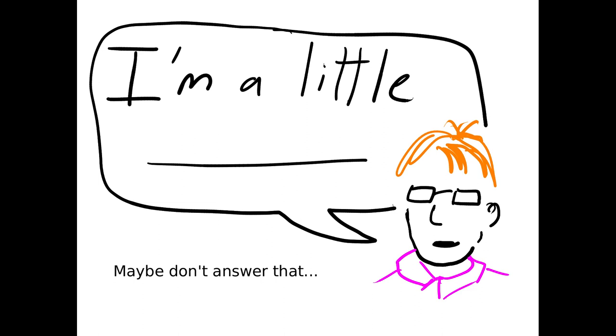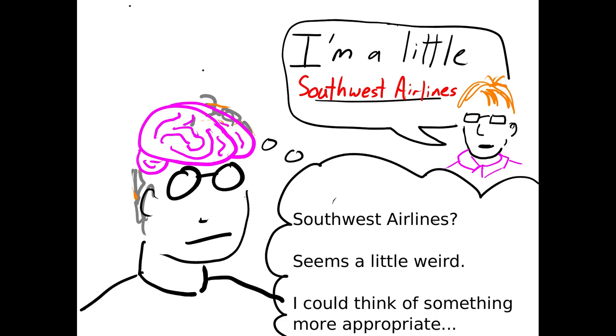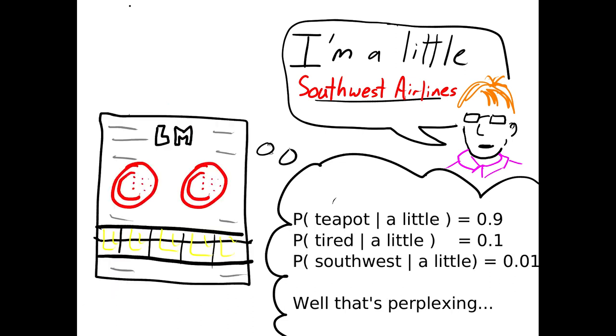If I give you the phrase 'I'm a little blank' and ask you to fill in blank, you probably didn't think of Southwest Airlines. You probably heard like a record needle scratch in your brain because it doesn't really make sense. You could think of something more appropriate, and that's what language models can do. An N-gram language model could basically estimate what should be in that blank and decide how perplexing it is.